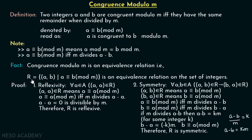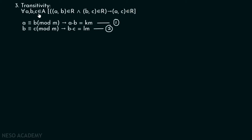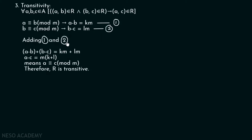Now let's see whether this relation is transitive. According to transitivity, for all A, B, C in the set, if (A, B) belongs to R and (B, C) belongs to R, then (A, C) belongs to R. (A, B) in R means A minus B equals K times M, and B congruent to C mod M means B minus C equals L times M for some integer L. Adding these two equations gives A minus B plus B minus C equals K times M plus L times M, which simplifies to A minus C equals M times (K plus L). Since K plus L is also an integer, A minus C is divisible by M, meaning A is congruent to C mod M. Therefore R is transitive.